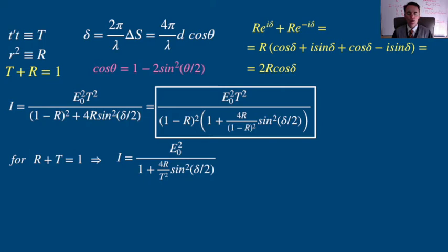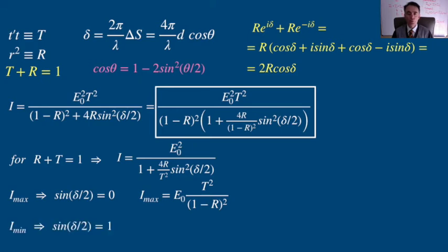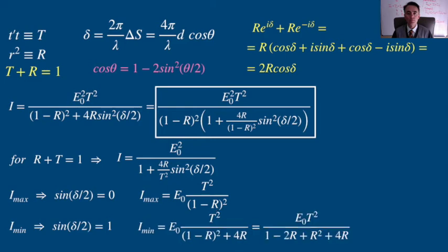From where we can calculate the maximum irradiance when the sine of delta halves is 0, and the minimum irradiance when the sine of delta halves is 1.